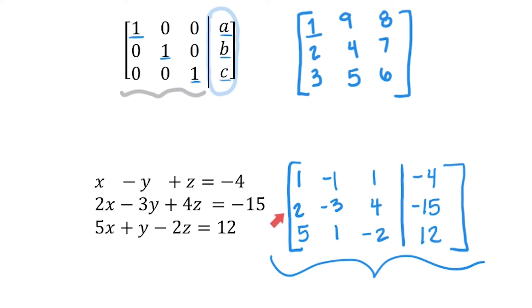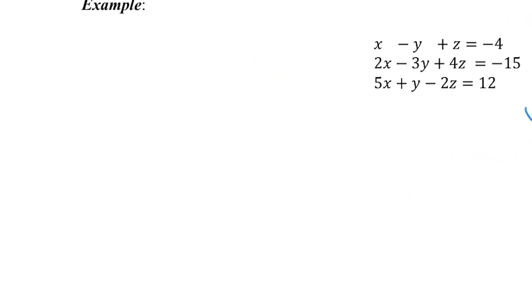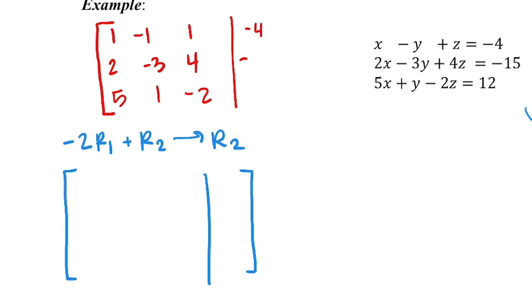All right, so I need to do this spot right here next. I need this 2 to become a zero. So I want to do a combination of the rows. What's nice is we have a 1 right above it, and we can change that 1 to be a negative 2 by multiplying this whole row by a negative 2. Because if that was a negative 2, when I add these two together, I will get a 0. So coming over here, we're going to do negative 2 row 1 plus row 2 to change row 2. And I will rewrite this system that we had right above. So we started with 1, -1, 1, 2, -3, 4, 5, 1, -2, and our constants were -4, -15, 12.